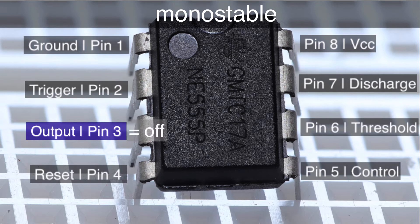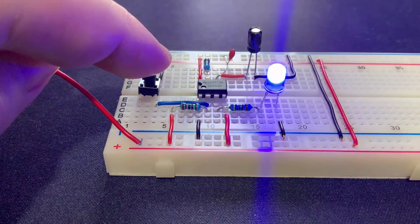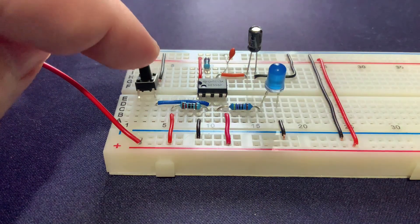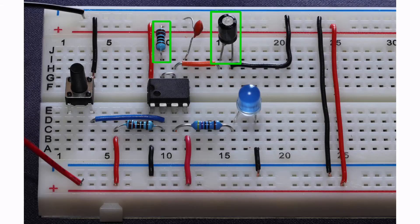When the 555 is sent a trigger pulse like I'm doing right now with this switch, the stable state gets interrupted for a period of time that is determined by the value of this resistor and capacitor.